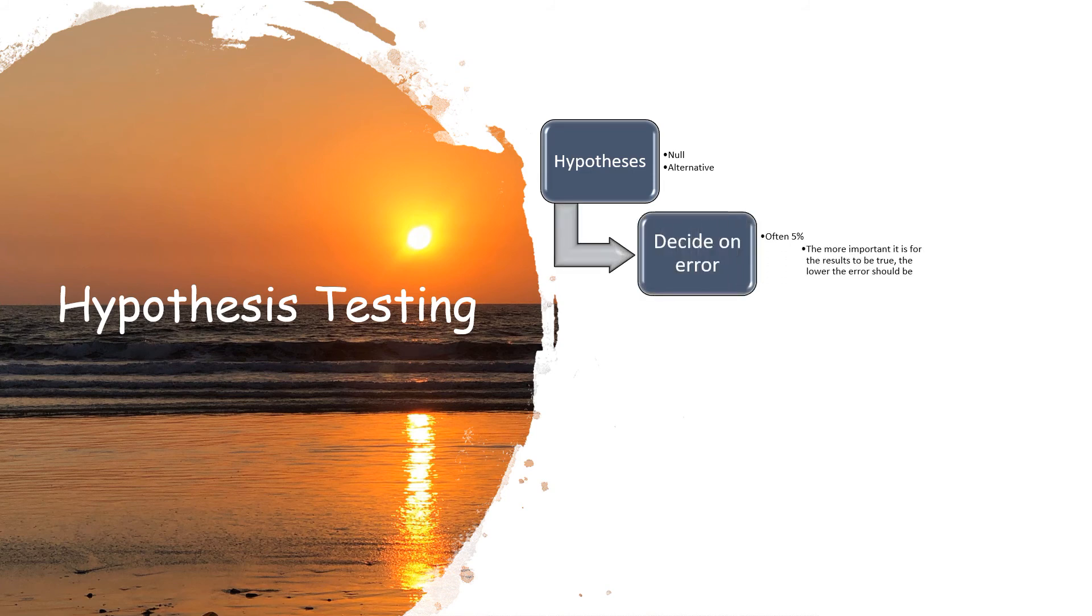You decide on the error that you're okay with. Often this error is 5%. But the more important it is for the results to be true, the lower the error should be. So if you're testing side effects about a drug, you really want the results to be very spot on, close to true. So we would lower the error because we don't want to have a larger margin of error.